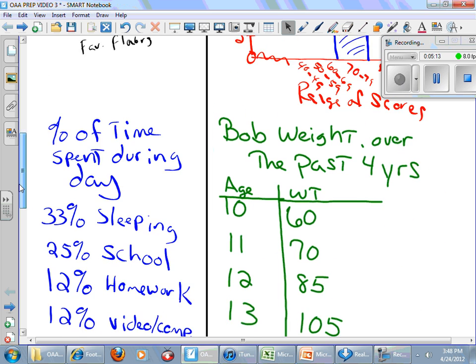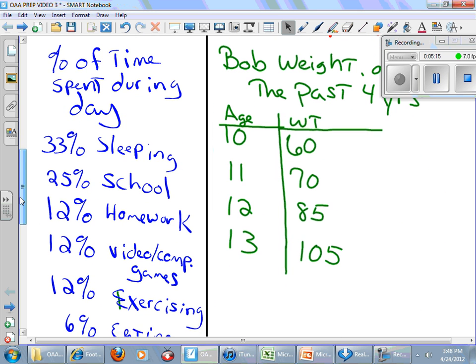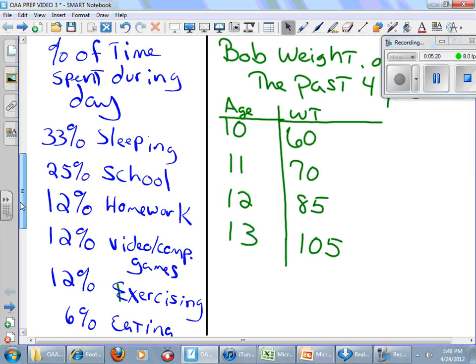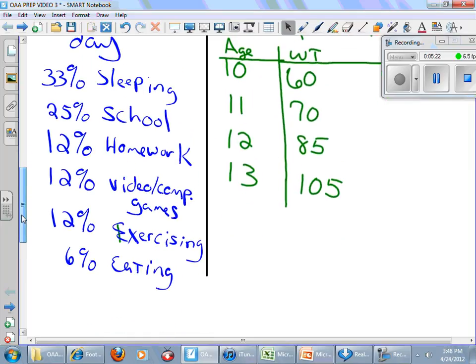But that's a histogram. It's just like a bar graph, except one variable is occurring in ranges. Okay. So, let's see here. Let's take a look at this blue one. The percent of time spent during each day. We pulled some kids, and we got the percent of time they did everything. Well, I see 33% of time they were sleeping. That would be about eight hours a day. 25% they were in school. Typical school day. 12% on homework. 12% on video or computer games. 12% exercising. And 6% of the time they were eating.